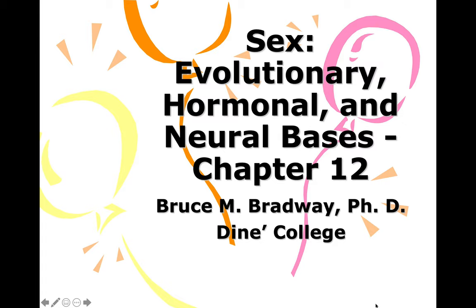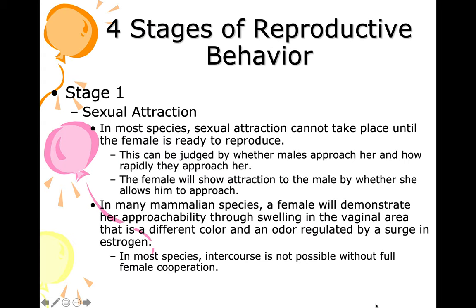We're going to talk about sex, and the first thing is how sex works. There are four stages of reproductive behavior, and we're primarily talking about mammals. The first stage is sexual attraction. In most species, sexual attraction cannot take place until the female is ready to reproduce, but that's not true in humans or primates.